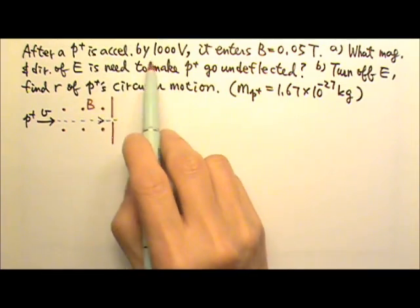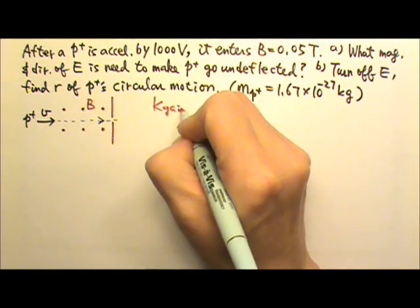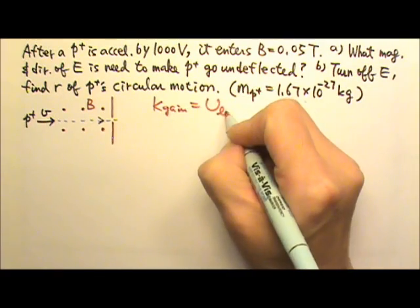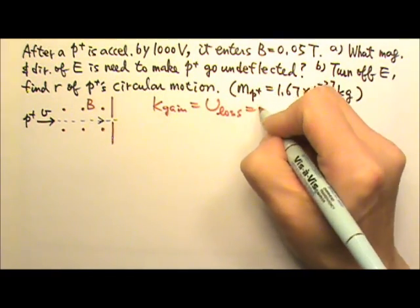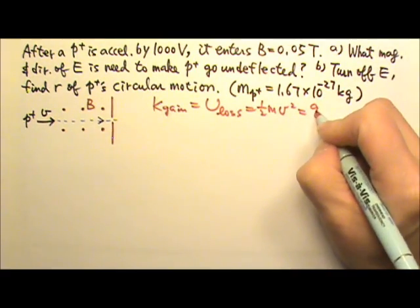For the accelerator part, we can use energy conservation. The kinetic energy gain comes from the potential energy loss. So one-half mv² equals U equals qV.